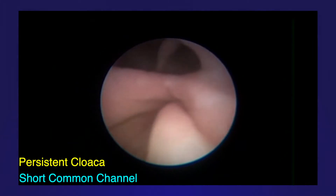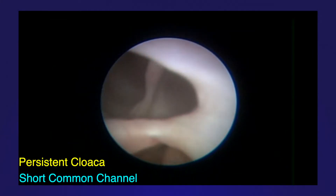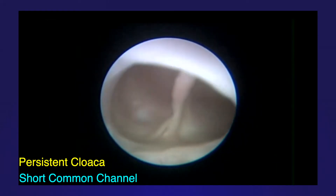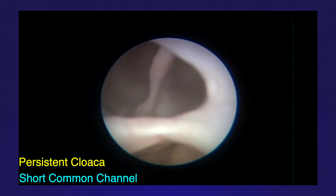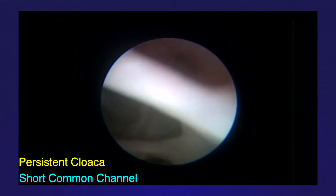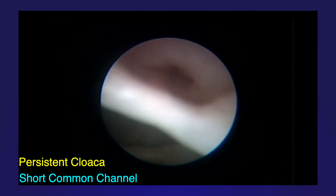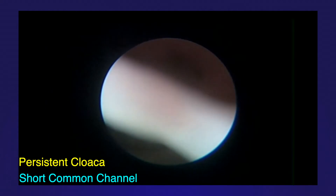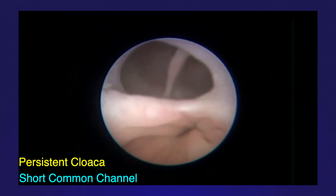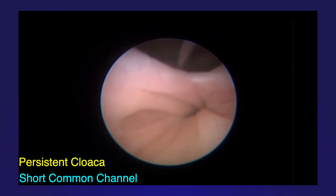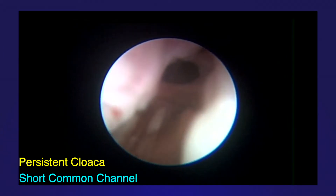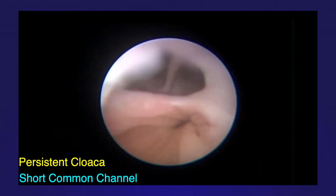In this case, a short common channel was clearly identified. All three orifices — urethra, vagina, and rectum — are identified within a short distance of the perineum. This view shows a junction of the urethral and vaginal orifices. A longitudinal septum resulting in two hemivaginas is identified, as is commonly seen in persistent cloaca.